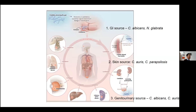Candida auris and Candida parapsilosis can also be found in the GIT but are often found colonizing the skin. In terms of the genitourinary tract, Candida albicans and sometimes Candida auris are found. The species really gives you an idea of where the fungus is coming from.